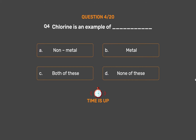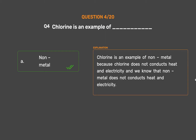The correct answer is Option A: Non-metal. Chlorine is an example of non-metal because chlorine does not conduct heat and electricity, and we know that non-metals do not conduct heat and electricity.